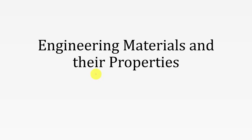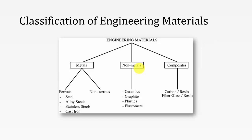Hello all. Welcome to the Design of Machine Elements Classroom. In this lecture we are going to discuss engineering materials and their properties. First, let me start with the classification of engineering materials. The engineering materials are basically classified into three: metals, non-metals, and composites.